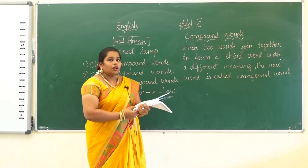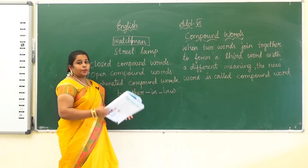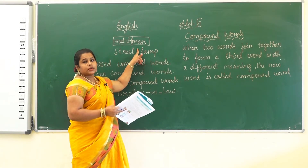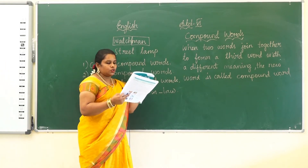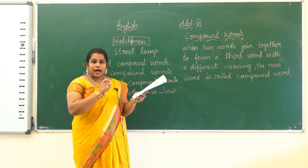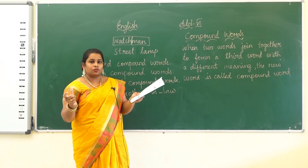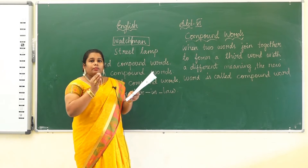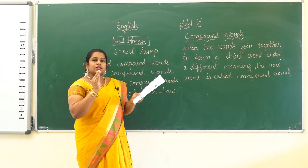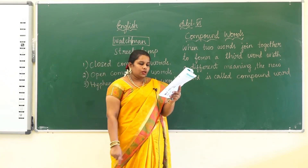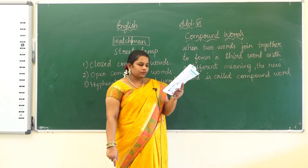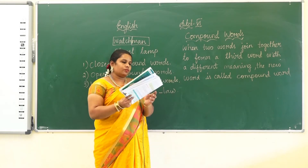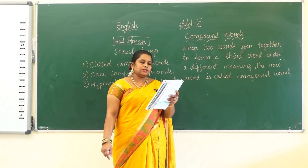Now we are moving to open compound words. Open compound word means we want to leave some space between the two words. For example, ice cream — ice separate, cream separate, we write them separately. But it is a compound word with some space in between. Next: coffee mug, full moon, head office, lawn tennis, dinner table.